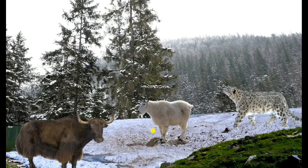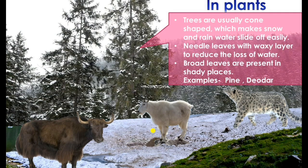In mountain habitats, plants are mostly triangular in shape so that snow slides off them. Their leaves are needle-like or very narrow to reduce water loss. However, in shady areas, plants have larger leaves because sunlight does not reach properly — larger leaves help capture more sunlight for photosynthesis. Examples of mountain plants include pine and deodar.